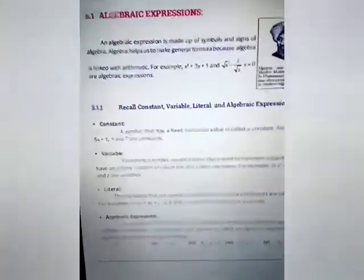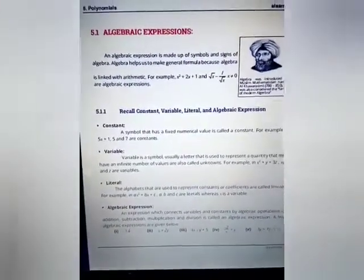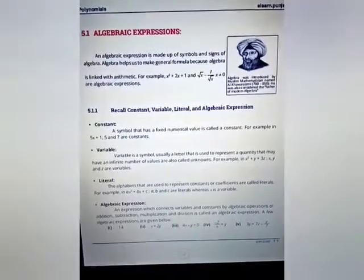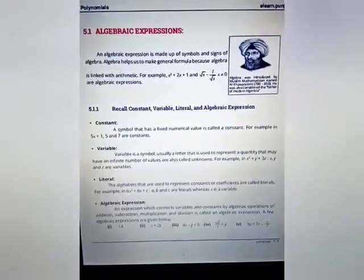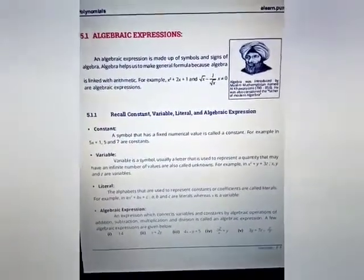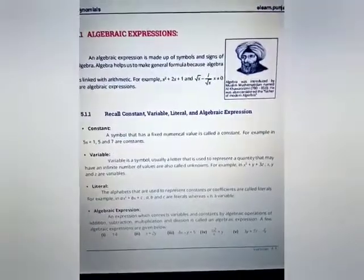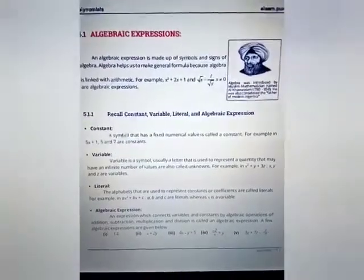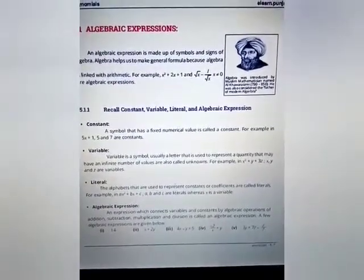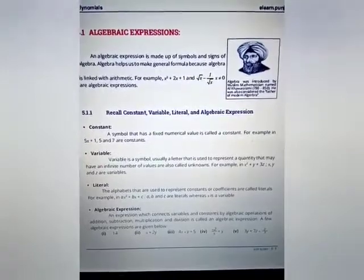A variable is a symbol, usually a letter, that is used to represent a quantity that may have an infinite number of values. These are called unknowns. For example, in x² + y + 3z, the letters x, y, and z are variables.